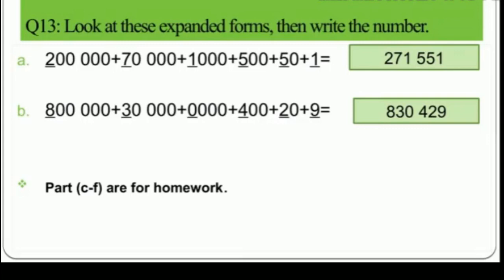Part B: terms are 800000 + 30000 + 0 + 400 + 20 + 9. Take first digits: 8, 3, 0, 4, 2, 9. Combined: 830429.